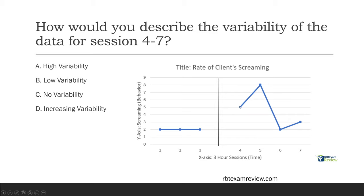The first data point is five, then eight, then two, then three. So if I just asked you how variable is this data — variability is just asking how much change is there in the data points — well, just from looking at it, there are some pretty big jumps. It's kind of all over the place. So would you say this is high, low, or no variability? I would say it's high. It's pretty obvious that there's a lot of variability in this data.